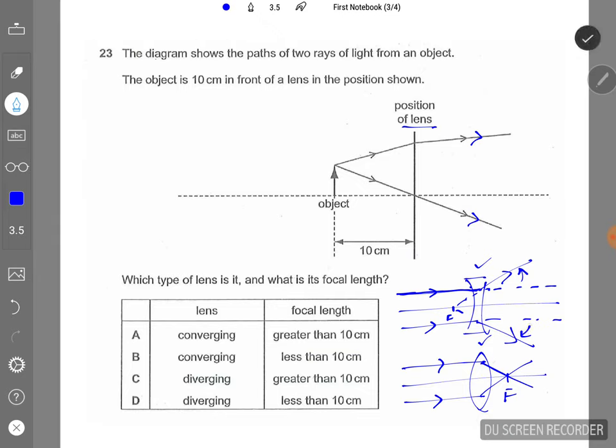But if it's a converging lens, the original path of the light is here. But after passing through the converging lens, they actually close up this way. So that's the characteristic of a converging lens. The rays actually close up, come closer together.